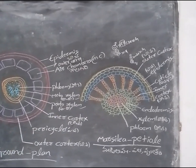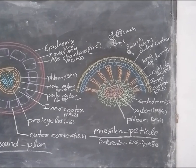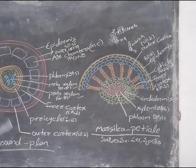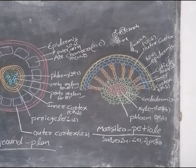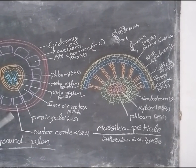This Cortex is differentiated into 3 regions: outer Cortex, middle Cortex, and inner Cortex.